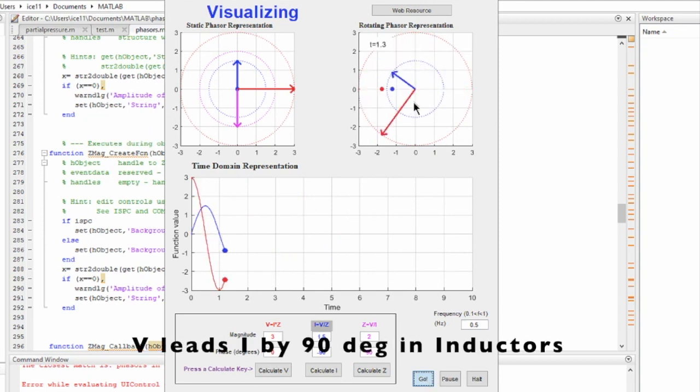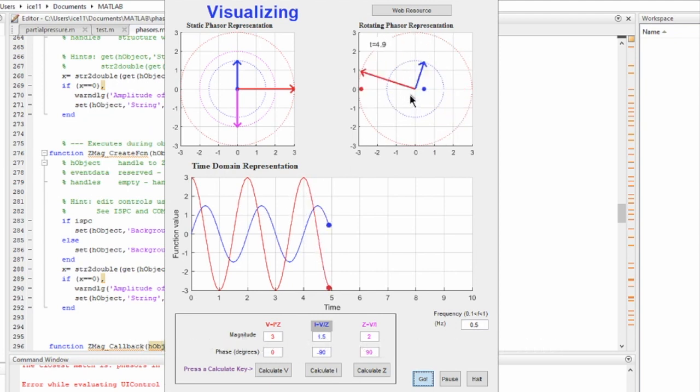So here you see the voltage phasor appears before the current phasor and it's in an anti-clockwise direction. If you look at the peaks, the voltage peak appears first before the current peak.